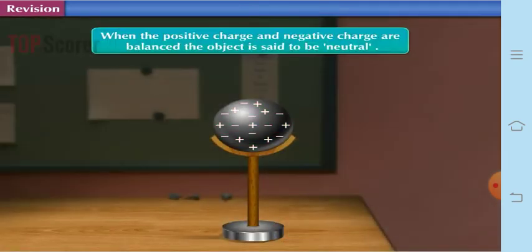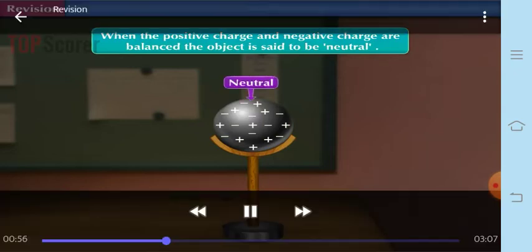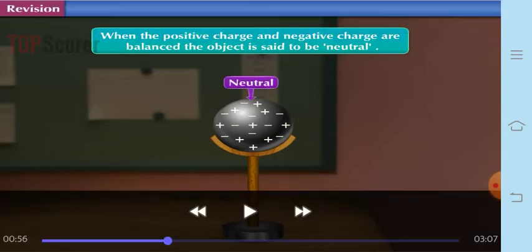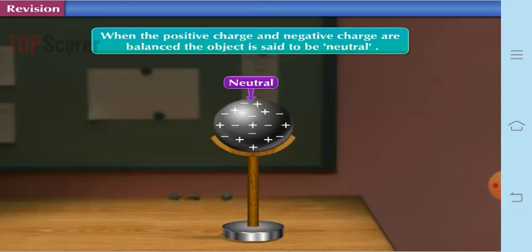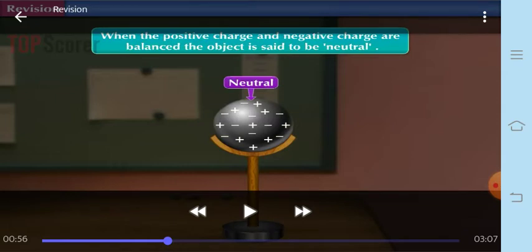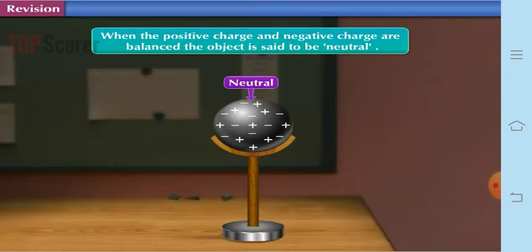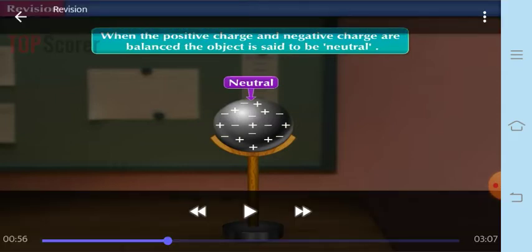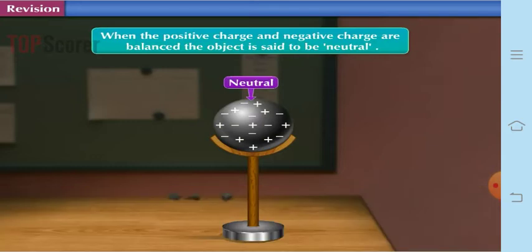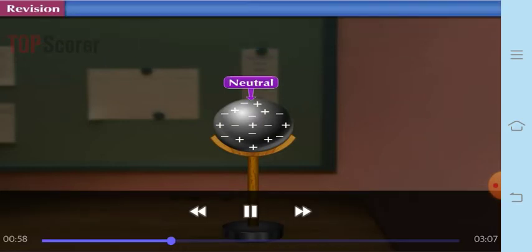When the positive and negative charges are balanced, the object is said to be neutral. When the positive and negative charges are balanced in the object, the object is said to be neutral. That means to be charged, there has to be imbalance. There has to be imbalance in the number of charges. Then only the object will be called charged.